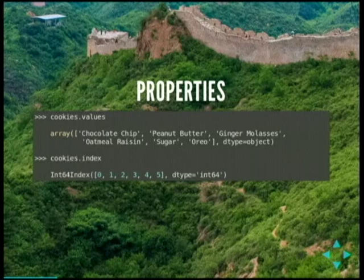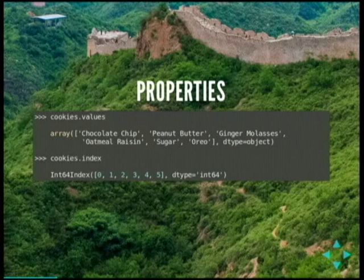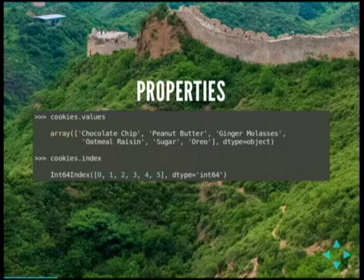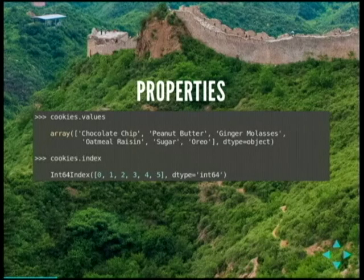I can get all values out of my series by calling series.values, or get the index by calling series.index. The index comes out as an int64 index — a long integer in the NumPy world. So let's actually give it a named index. I'm going to create a list of cookies with counts and then use the cookie type as the index, so I end up with a vector of counts with cookie types as the index.